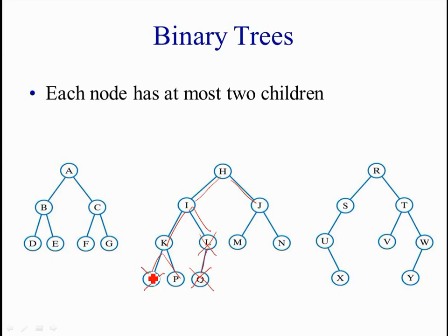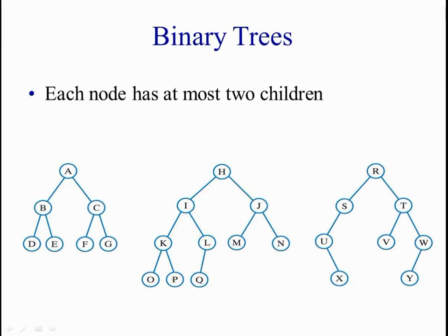...and we insert node Y as a left child of N here, what we have is something similar to the full tree on the left, because every node has exactly two child nodes and all the leaves are at the same last level. You cannot find a leaf in a previous level.